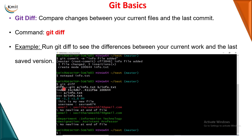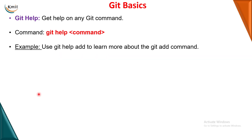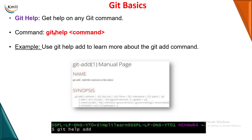The next command is git help. If you forget how to use a particular command in git, simply type git help followed by that command name. It will open the manual page of git and give you complete details: what the command does, how to use it, its syntax, examples, and various options. These are the basic commands of git, and now I will demonstrate how they are used.